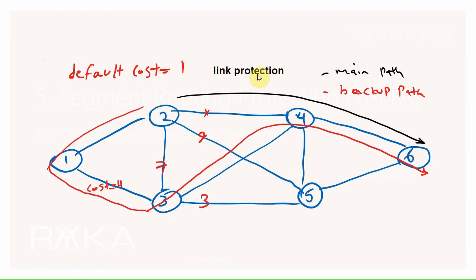What is link protection? When we protect a link, IGP in segment routing pre-calculates the backup route that should be used when that link fails and installs the backup route in the routing table before any failure. When that link fails, the backup route is already in the routing table and is used immediately in less than 15 milliseconds. In our topology, we want to protect the link between R2 and R4.